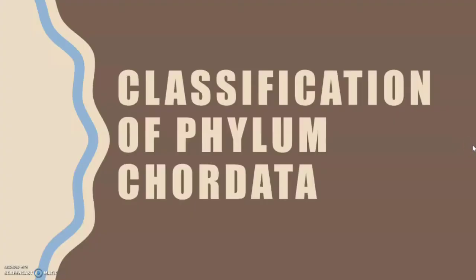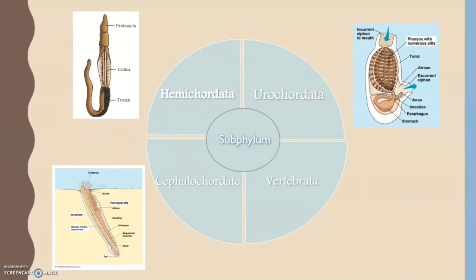For the classification of Phylum Chordata, this phylum is divided into four subphyla: Hemichordata, Urochordata, Cephalochordata, and Vertebrata. Urochordata and Cephalochordata are also known as Protochordata, which are marine animals. They are invertebrates but share attributes of chordates. Hemichordata are soft-bodied, worm-like marine organisms such as acorn worms and pterobranchs.